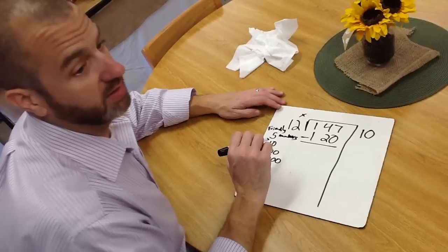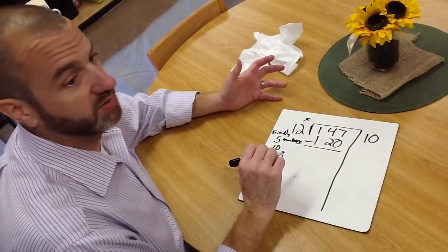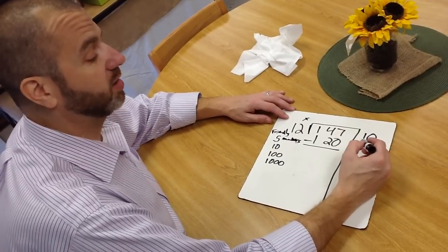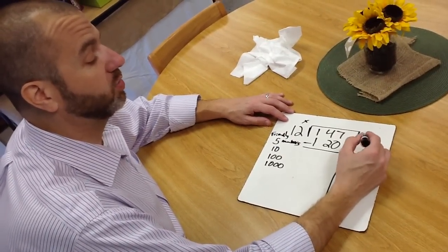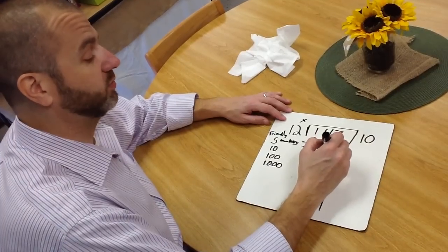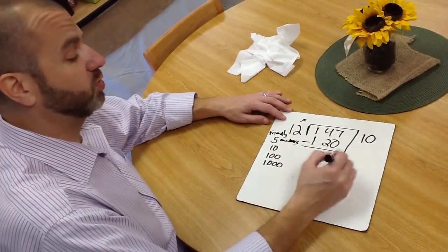As you can see already, that's different than the way you and I were taught, but what it's doing is it's building a sense of place value, and it's building a sense of number sense, because we're not saying it goes in one time, we're saying it goes in 10 times. So we do our subtraction, 0 from 7 is 7, and 2 from 4 is 2. So we're left with 27.